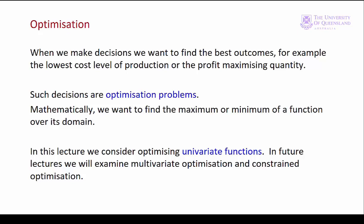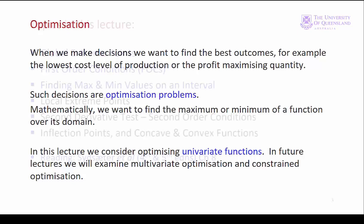We want to determine the maximum or the minimum value of a function and to show that it is in fact a maximum or a minimum value. In this lecture we'll examine how to find the maximum or minimum of a univariate function. In later lectures we'll consider multivariate optimisation and constrained optimisation.